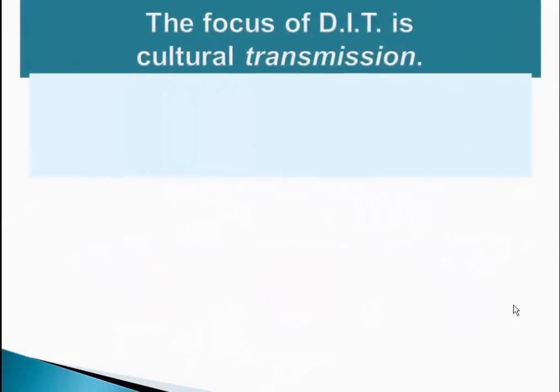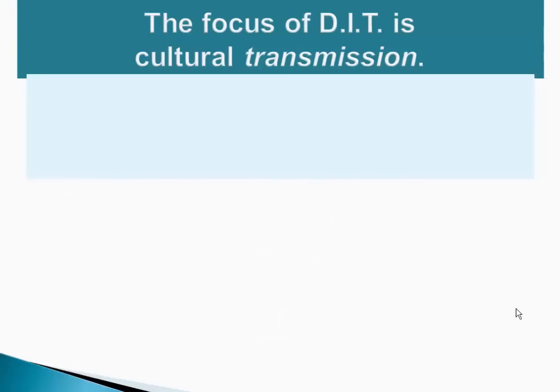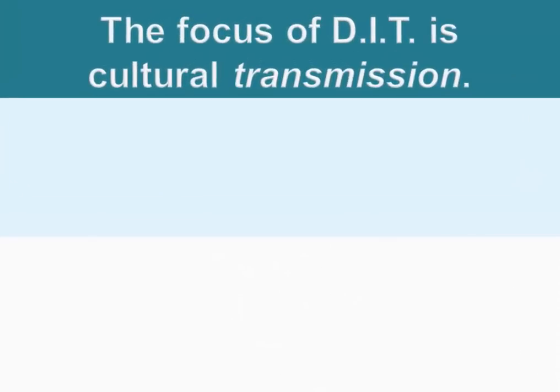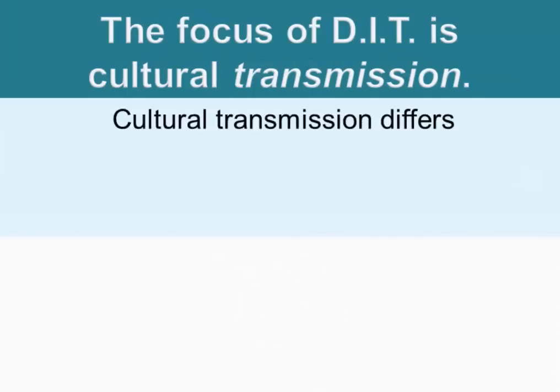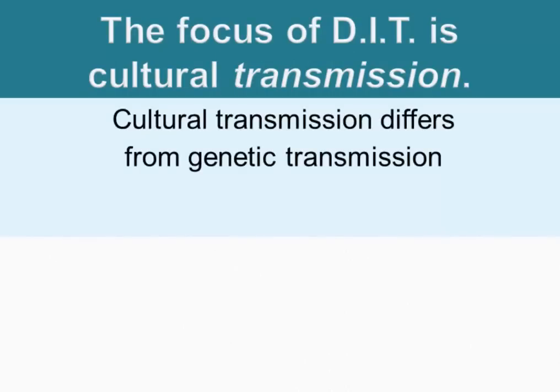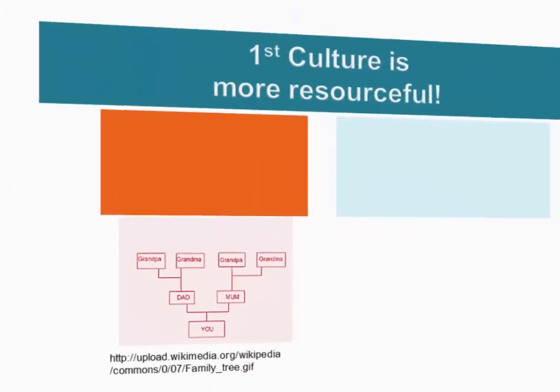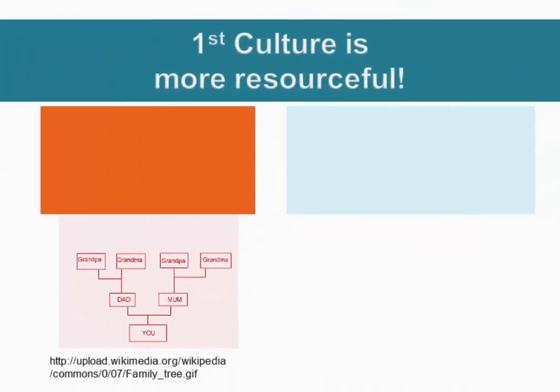The focus of dual inheritance theory is on cultural transmission, and cultural transmission differs from genetic transmission in four key ways. The first difference is that culture is more resourceful.